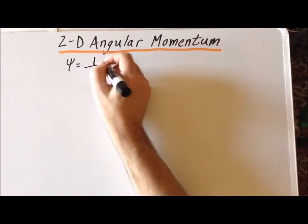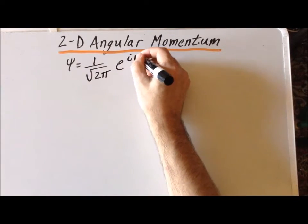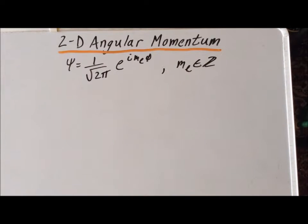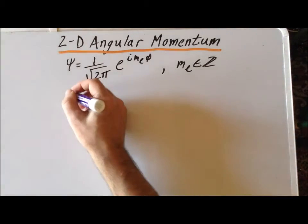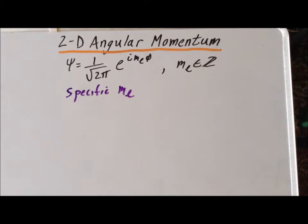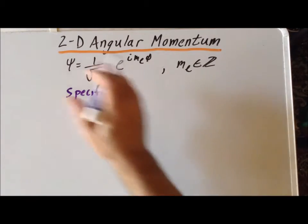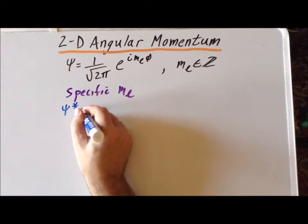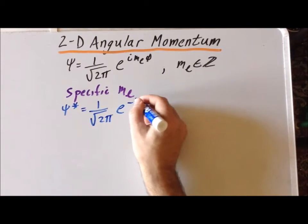Recall that the wave function for the particle in a ring is equal to 1 over the square root of 2-pi times e to the i times m-sub-l times phi, where m-sub-l is an integer. Let's take the case where we have this wave function with some specific m-sub-l value. We want to determine the probability density — the probability of finding the electron at a particular angle around the ring. The complex conjugate is obtained by replacing i with minus i, giving 1 over the square root of 2-pi times e to the minus i times m-sub-l times phi.